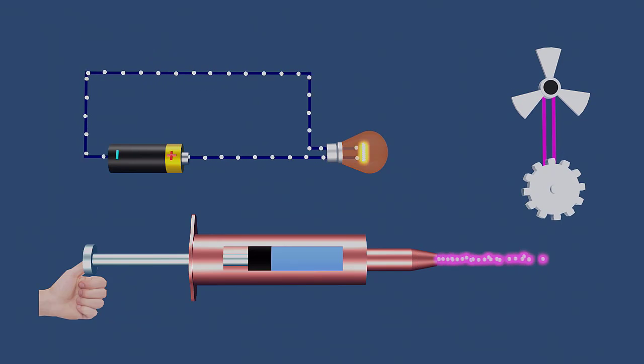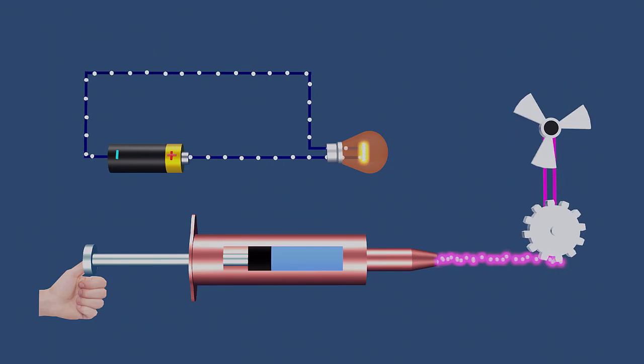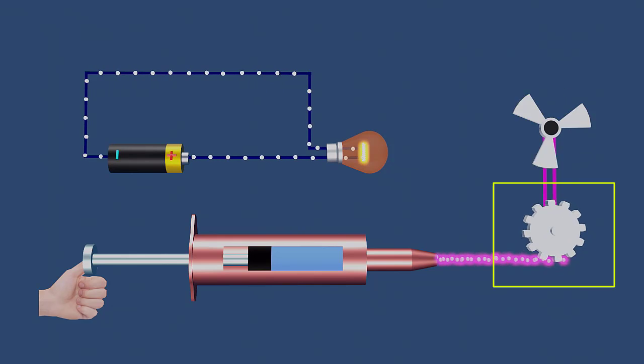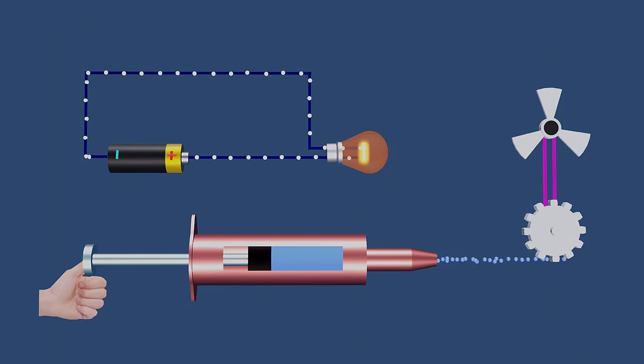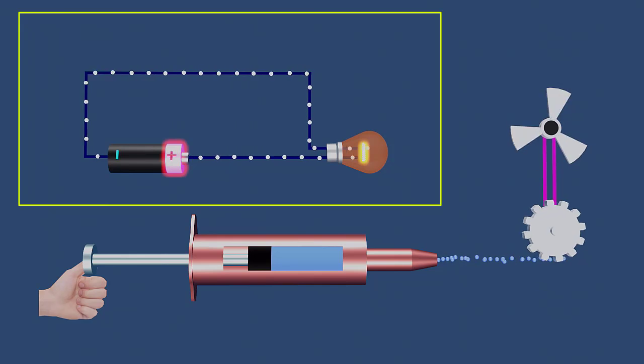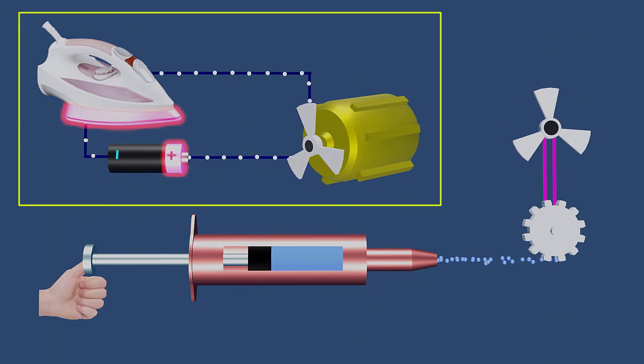The energy of a moving fluid can be converted to other forms of energy, such as turning a wheel. Similarly, electrical energy can be converted to many different forms, like light, heat, or motion.